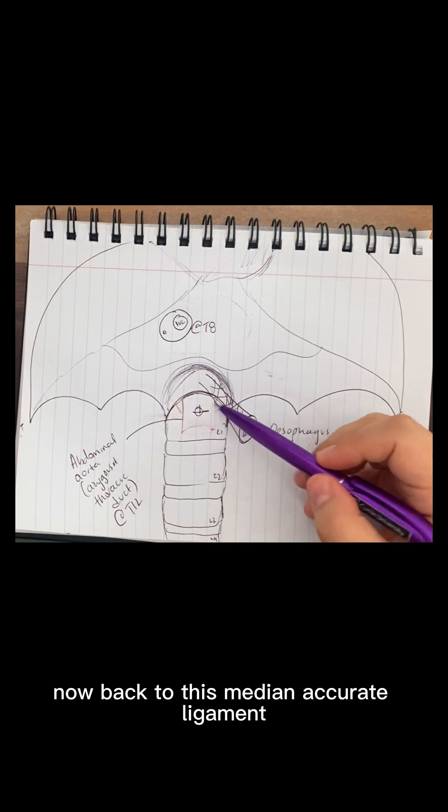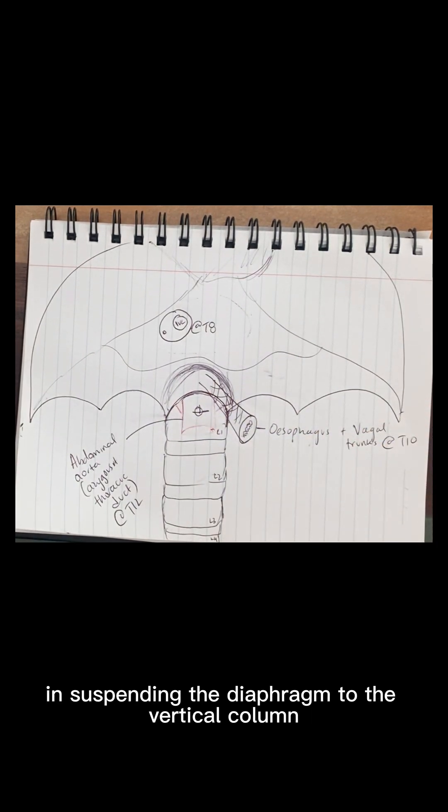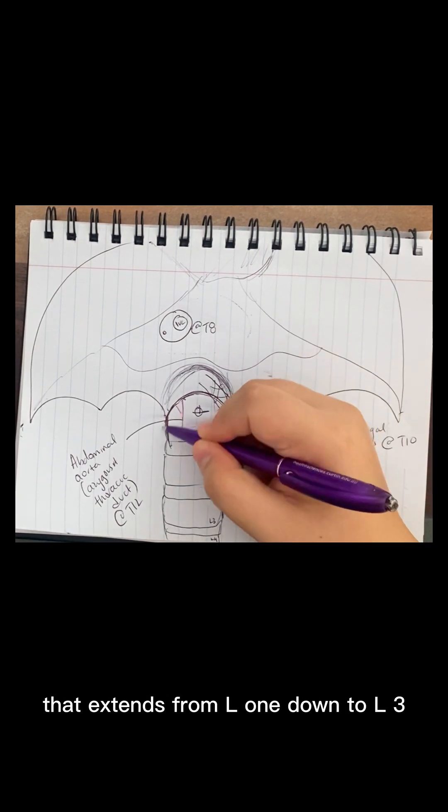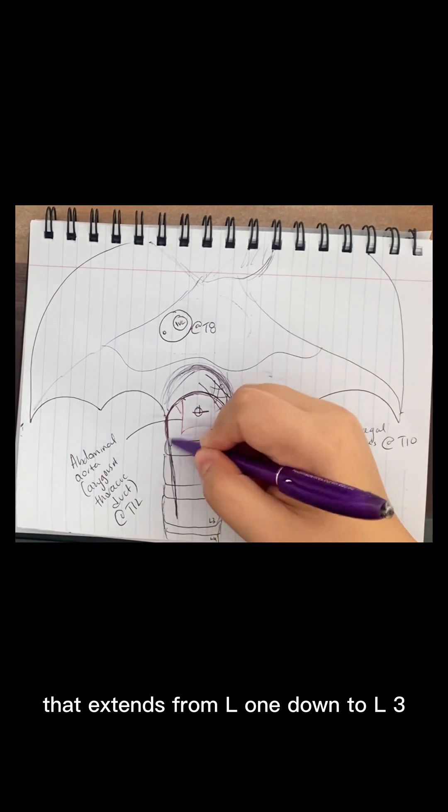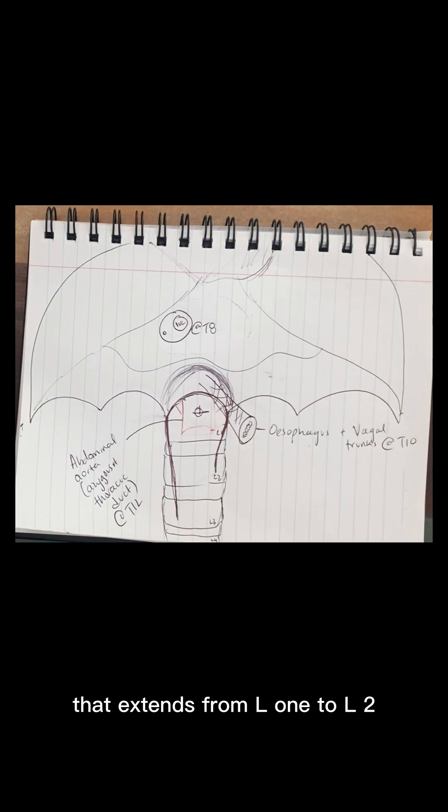Now, back to this median arcuate ligament. This median arcuate ligament is going to play a role in suspending the diaphragm to the vertebral column. So we have the right crus that extends from L1 down to L3. And then we have the left crus that extends from L1 to L2.